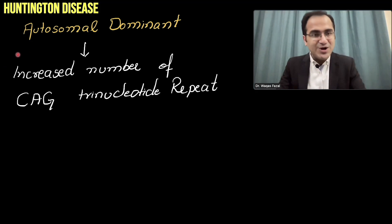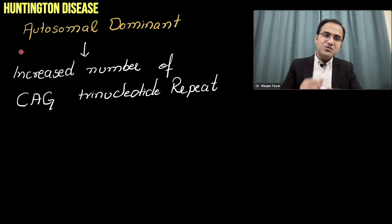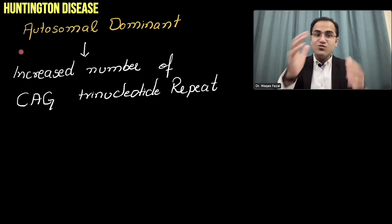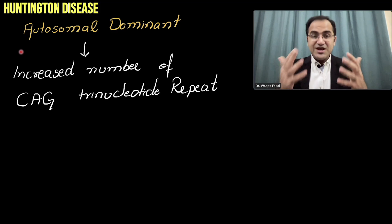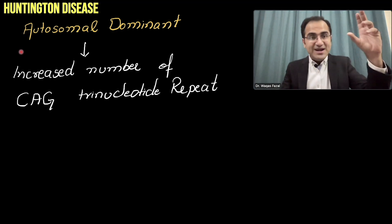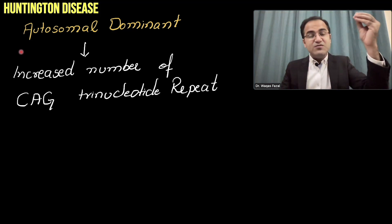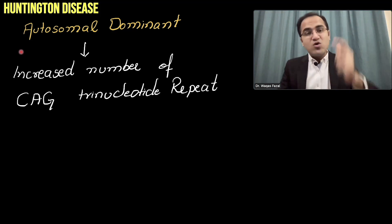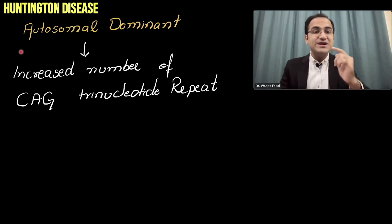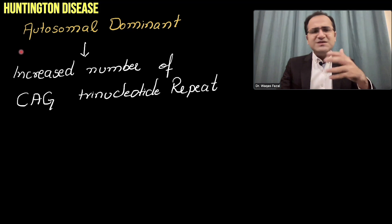Huntington disease is a genetic disorder transmitted in families. There is usually a family history of movement disorder. It is an autosomal dominant disorder, so if one parent is affected there is a 50% chance the child will also be affected, because even one copy of the gene can cause the disease.